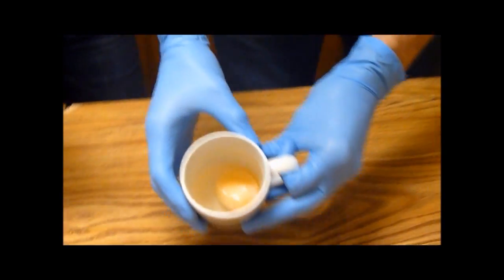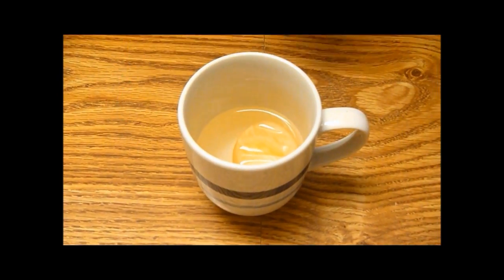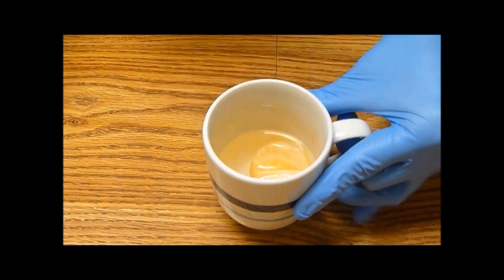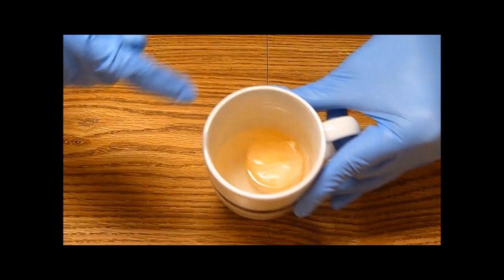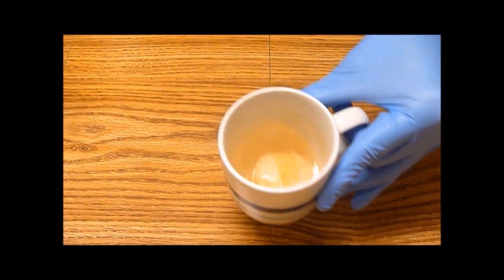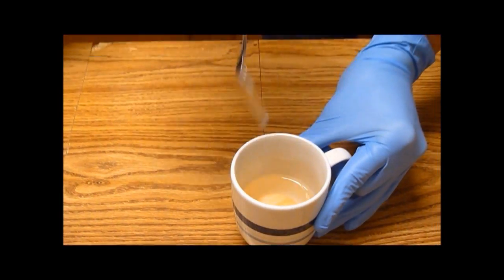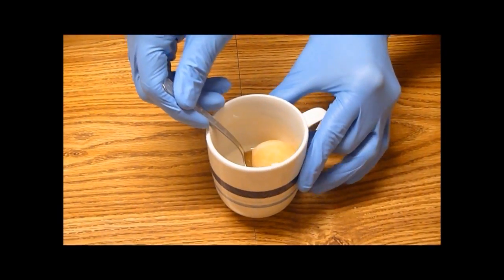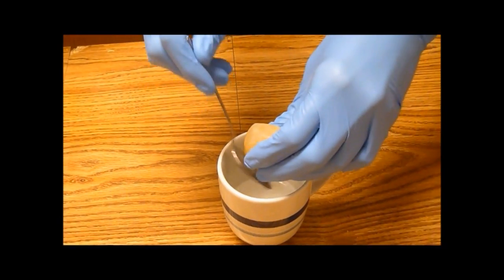So here, the egg is very deflated. And also, the corn syrup, you can see, is a lot less viscous, so it's a lot more liquidy. And this is because the water from inside the egg went out into the corn syrup.